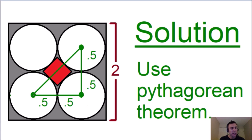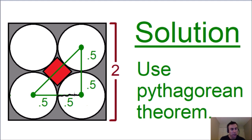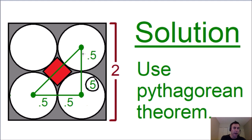We know that this distance here — half of the bottom length — is the radius of one of the circles. And the radius of the circle is going to be a quarter of the side length of this larger square. So a quarter of two, which is 0.5. We know that this distance is 0.5, and this distance right here is also 0.5, because that's the radius of another circle, and so on and so forth. That's why all of these distances are 0.5.